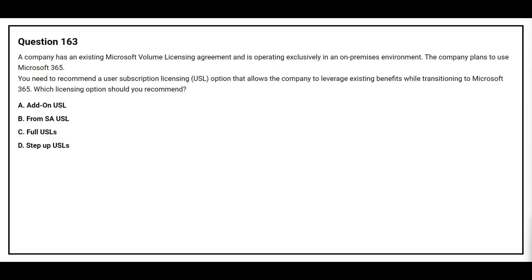Question number 163. A company has an existing Microsoft Volume licensing agreement and is operating exclusively in an on-premises environment. The company plans to use Microsoft 365. You need to recommend a user subscription licensing (USL) option that allows the company to leverage existing benefits while transitioning to Microsoft 365. Which licensing option should you recommend?